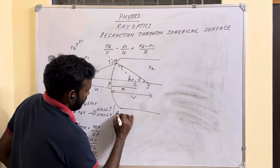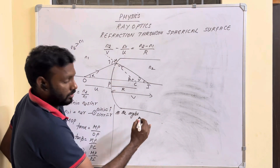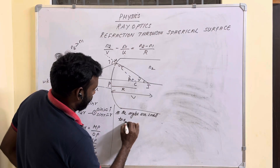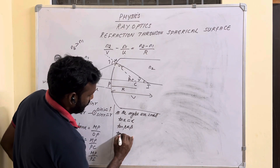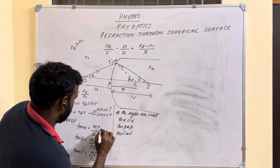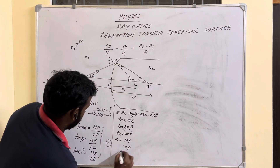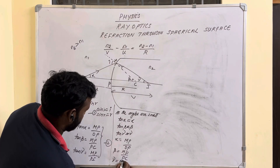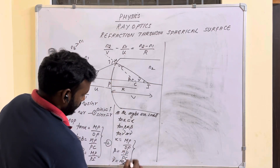As the angles are small, we apply the small angle approximation: tan α ≈ α, tan β ≈ β, tan γ ≈ γ. So the expressions become: α = MP/OP, β = MP/PC, and γ = MP/PI. Let this be equation number three.